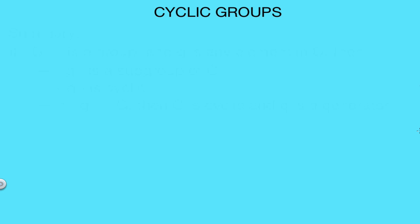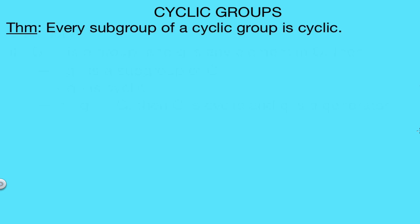In this video I want to continue talking about cyclic groups, and specifically I want to go over a theorem that says that every subgroup of a cyclic group is also cyclic. This is an interesting theorem — it tells us that we can have no non-cyclic subgroups of a cyclic group.